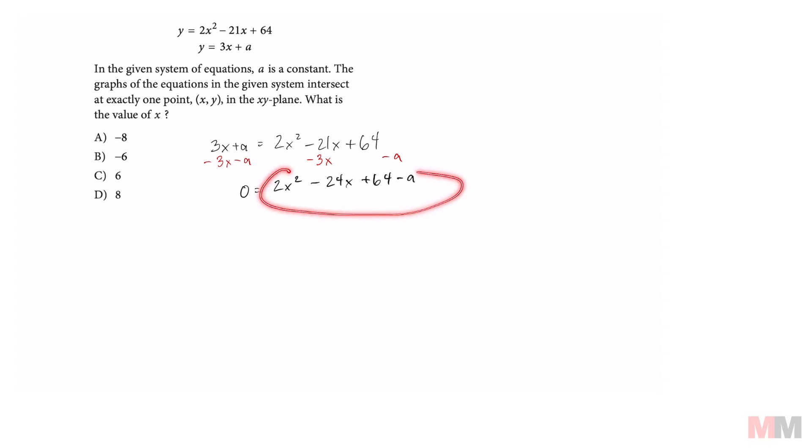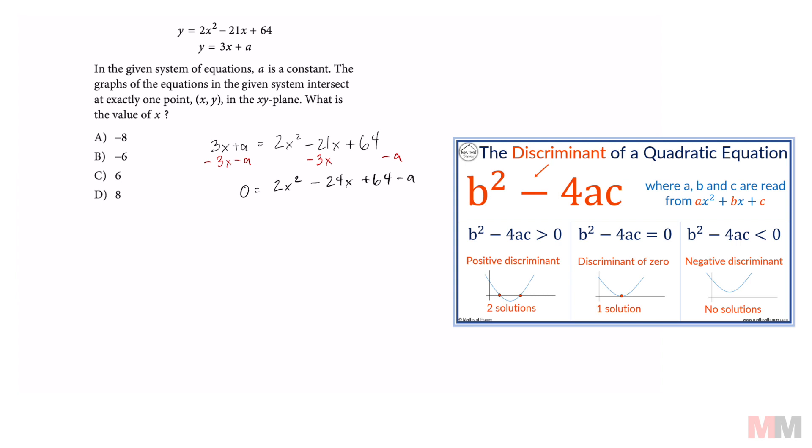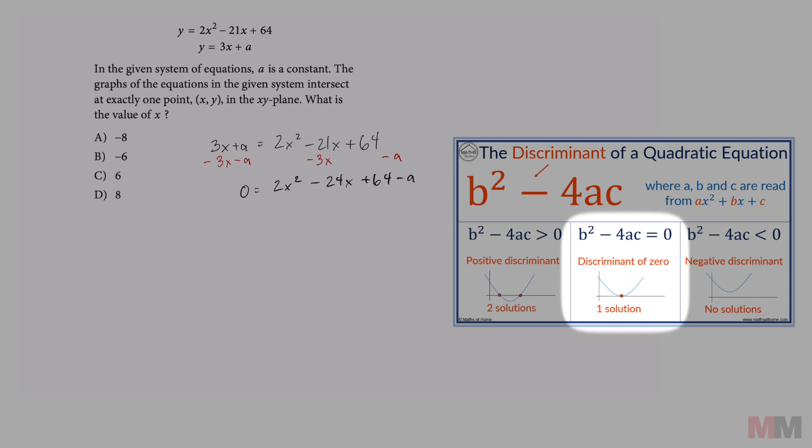We can't really solve for X at this moment because we need to find A first. And in order to get that, we're going to use the most important information in this question, which is this right here. For this information, you're going to have to use the discriminant formula, B squared minus 4AC. Something that only has one solution has a discriminant that equals 0.